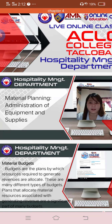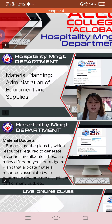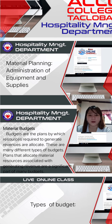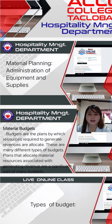Material Planning: Administration of Equipment and Supplies. Budgets are the plans by which resources required to generate revenues are allocated. There are many different types of budgets. Plans that allocate material resources associated with generating revenue are a significant part of many budgets.